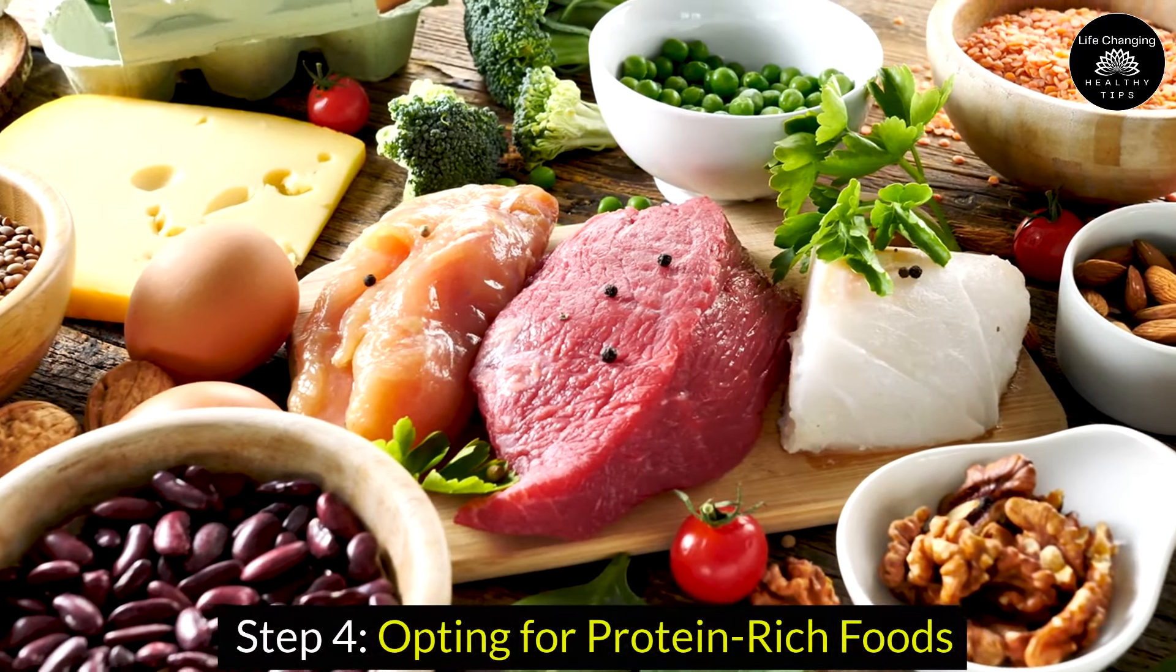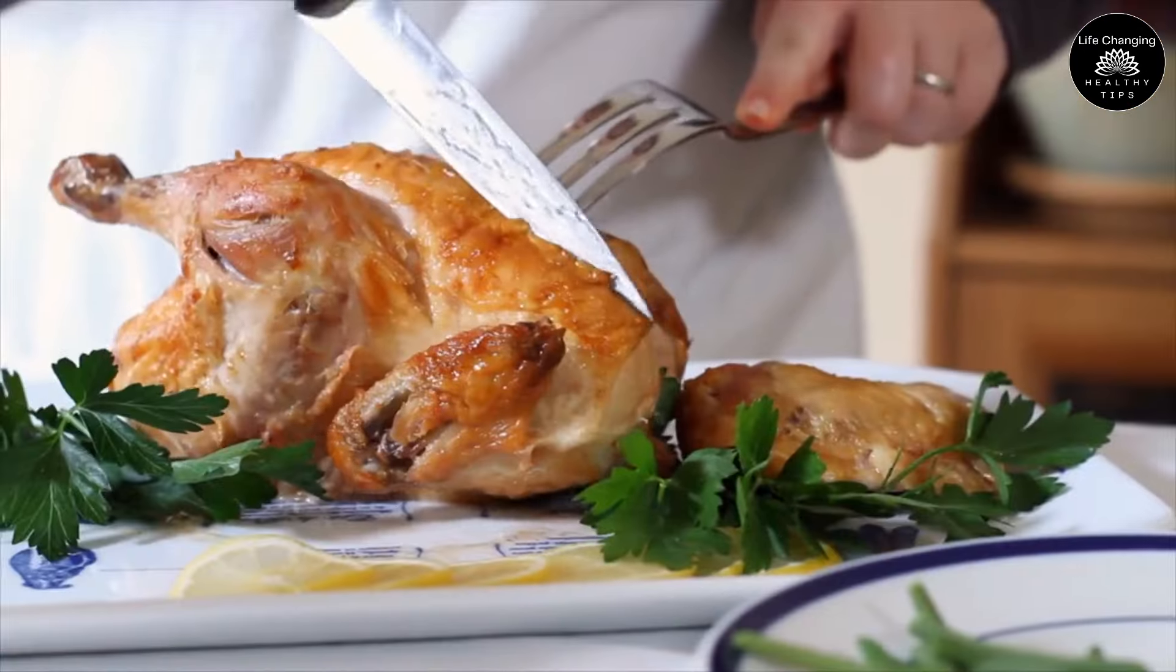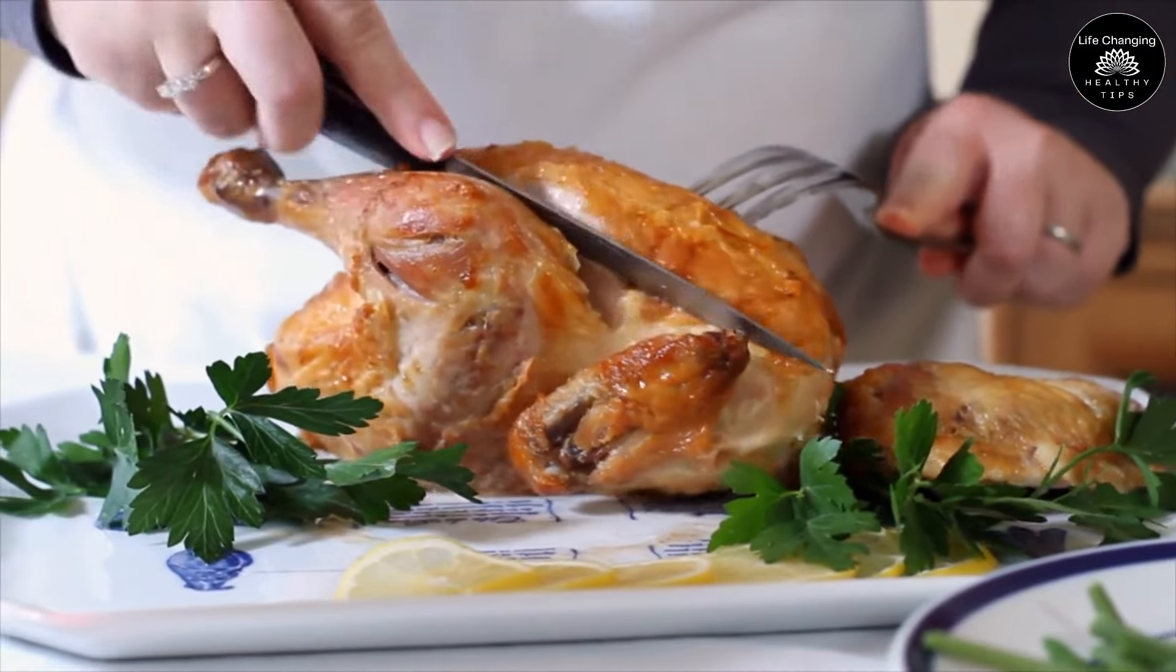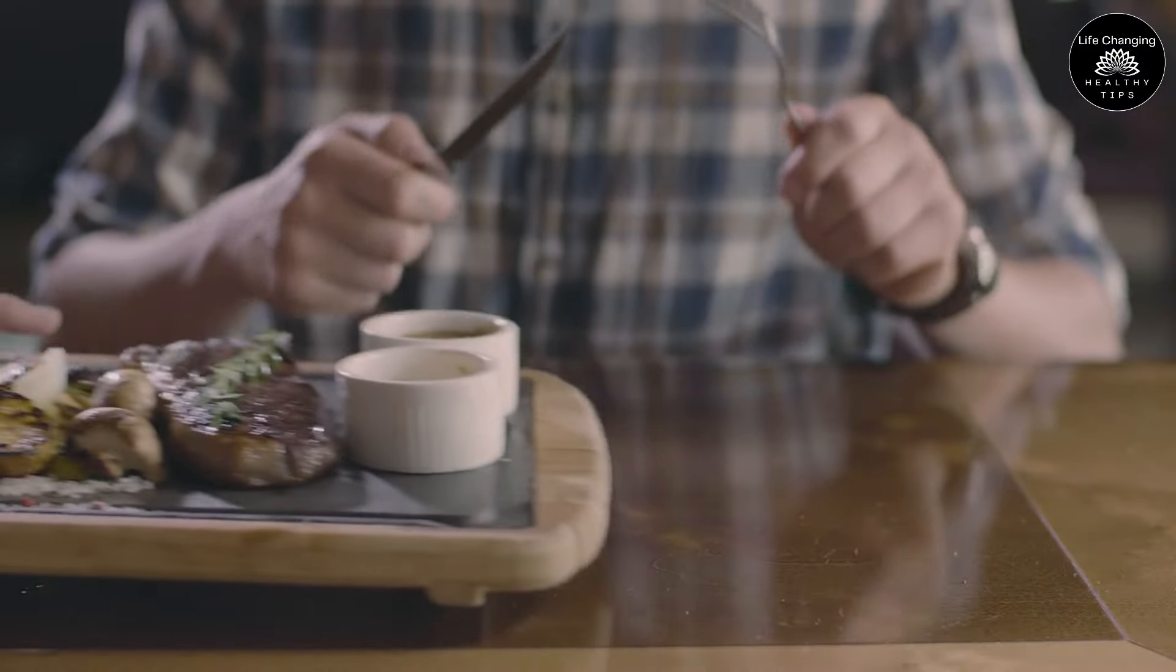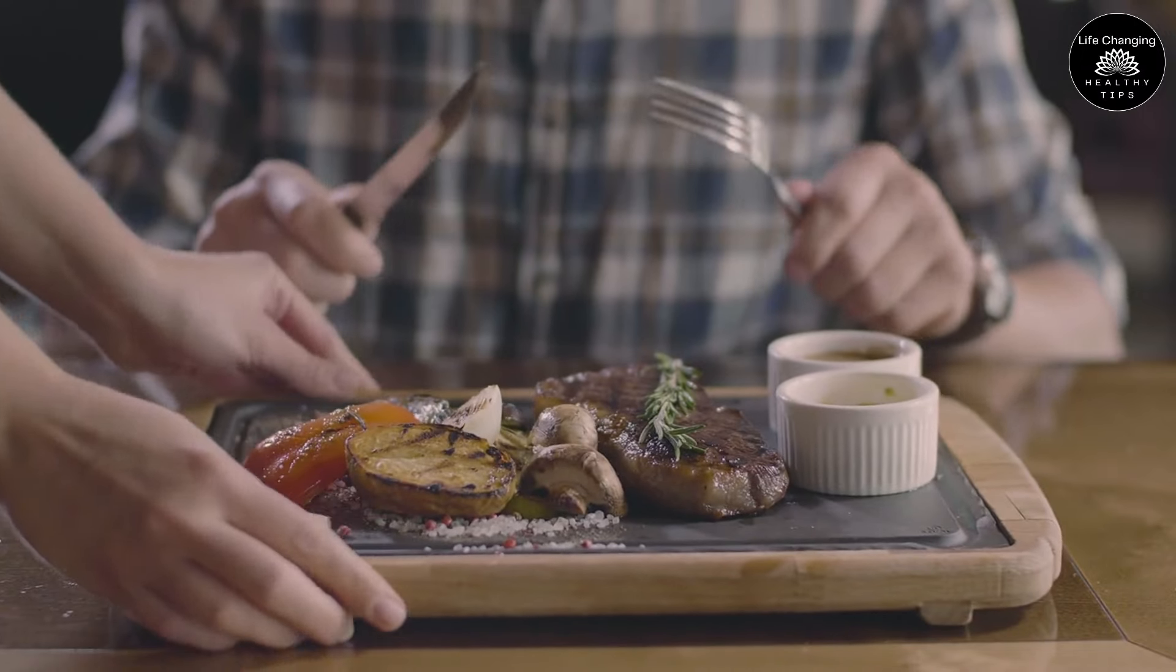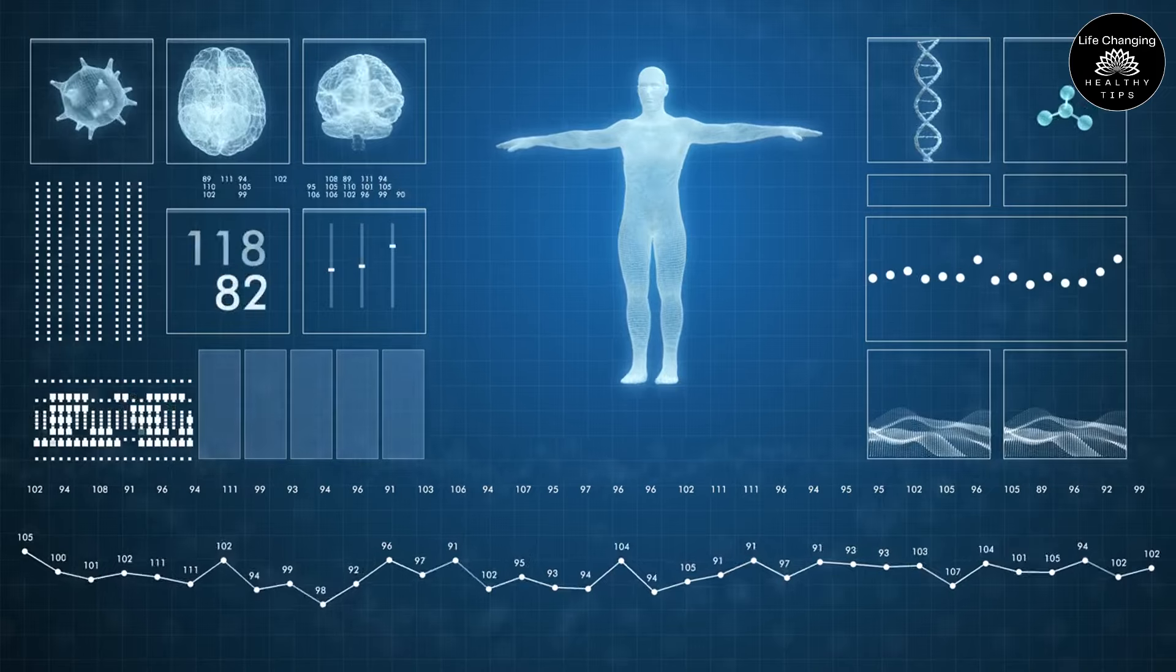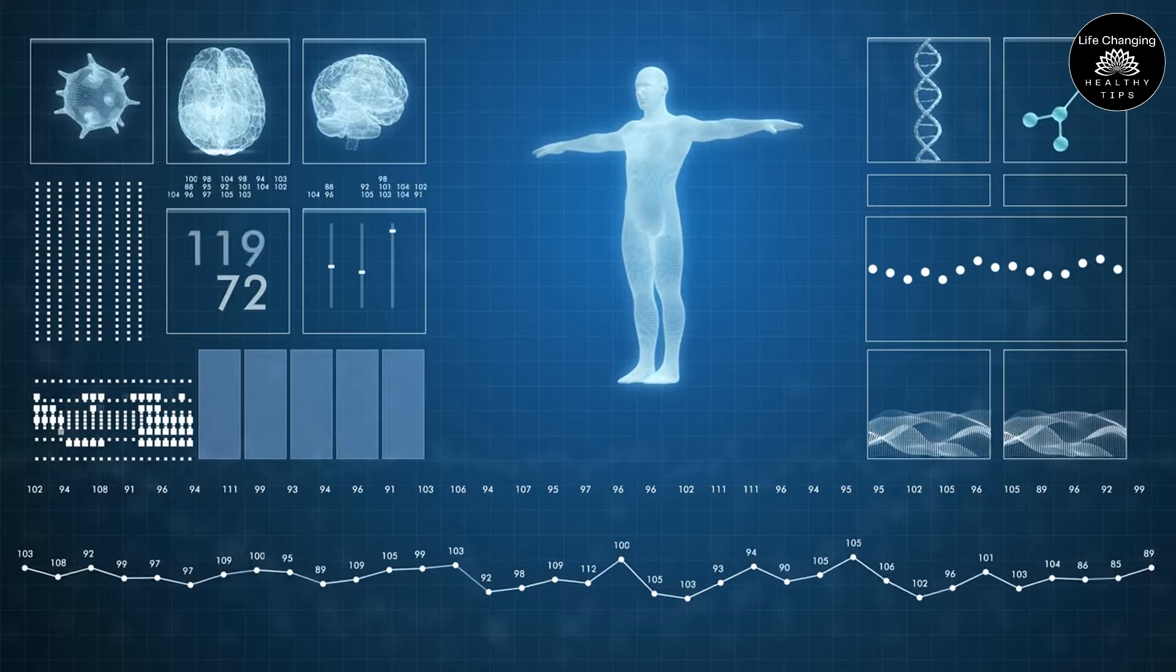Step 4. Opting for Protein-Rich Foods. Protein-rich foods play a vital role in controlling insulin levels and promoting fat burning. Not only are they satiating, keeping you feeling full for longer and reducing cravings for high-carb snacks, but they also have a higher thermogenic effect than fats and carbohydrates.